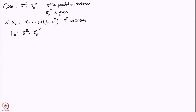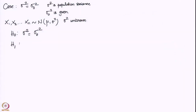The situation arises just as it does for testing H0: mu equals mu-zero. We consider the alternate hypothesis H1 as sigma-square not equal to sigma-naught-square — this is the two-sided alternative.